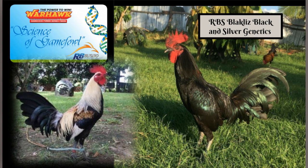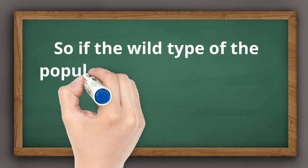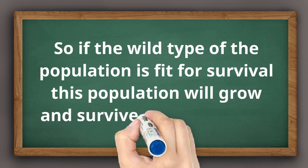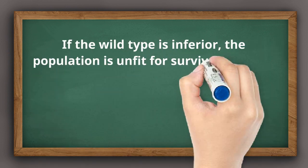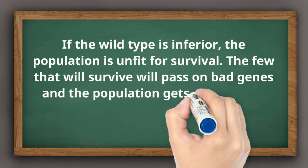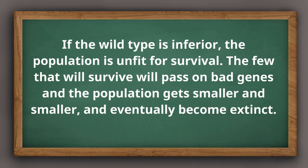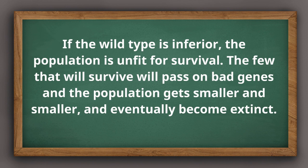So, if the wild type of a population is suitable for survival, chances are this population will survive for a long time. Because generation after generation, a greater number of the individuals in this population will survive and carry on the reproduction process, passing on good genes. If the wild type of a population is inferior, the population will become unfit for survival. Few individuals will survive, and those few who somehow manage to survive will pass on bad genes.